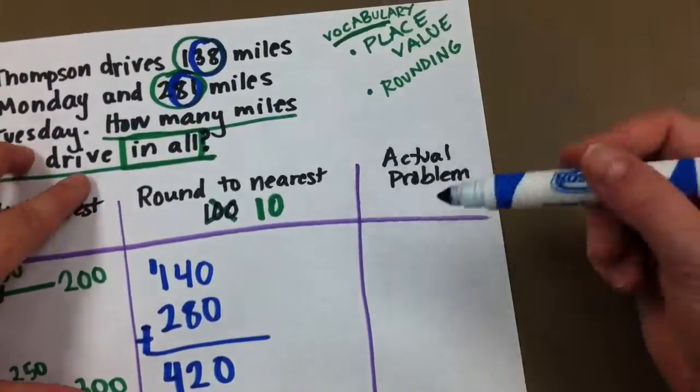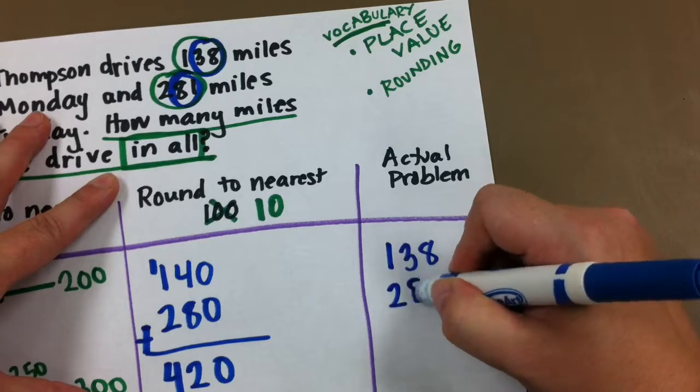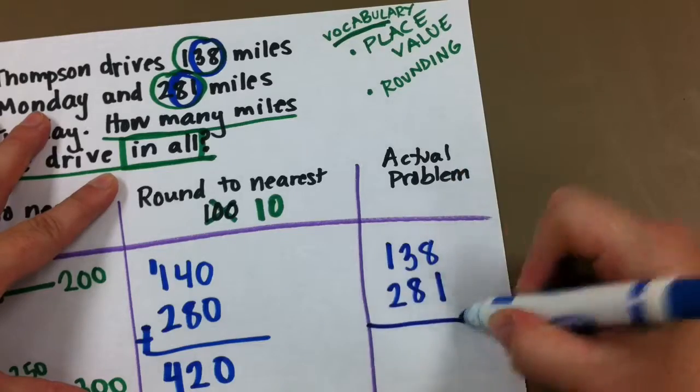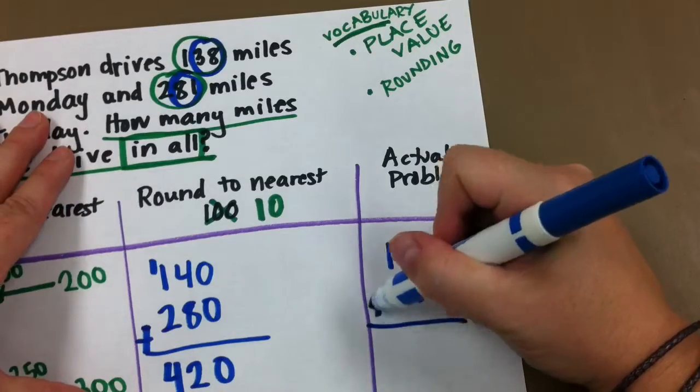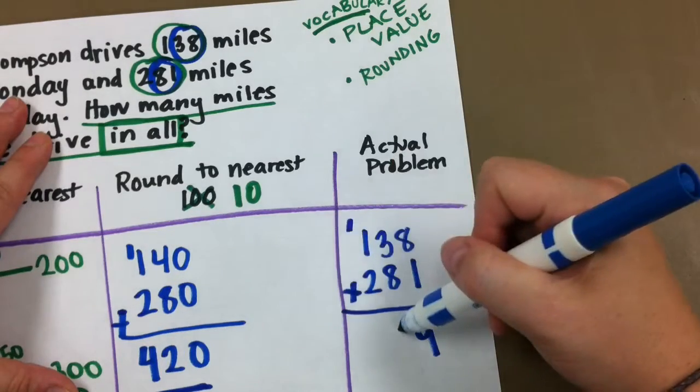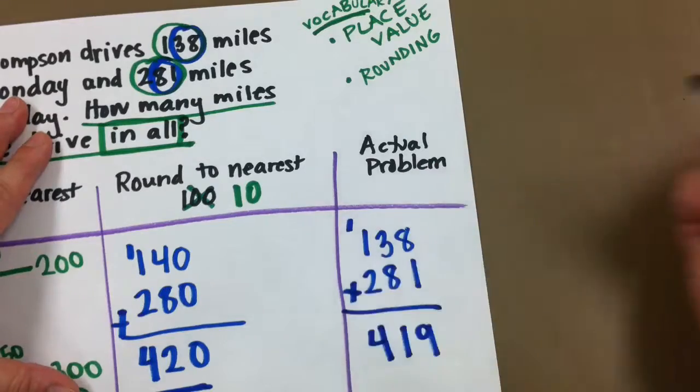All right. So our actual answer, I have to make sure I line up my 1s place, my 10s place, and my 100s place nice and neat. And I'm adding to solve this math problem. Carry my 1, 2, 3, 4, 419.